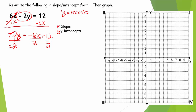Negative divided by a negative is a positive; 2 divided by 2 is 1, so that's just y. Negative divided by a negative is positive, and 6 divided by 2 is 3, so that's positive 3x. Positive divided by a negative is a negative, and 12 divided by 2 is 6, so that's minus 6.